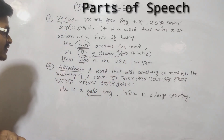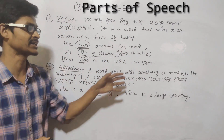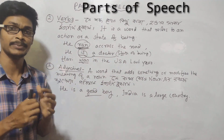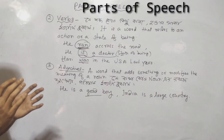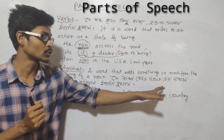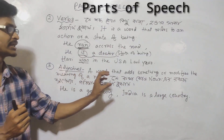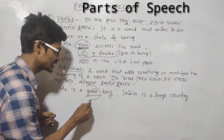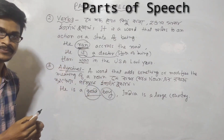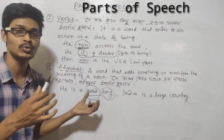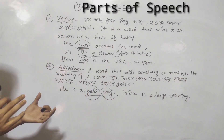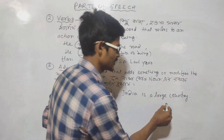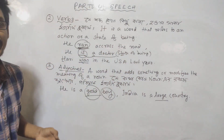What is an adjective? An adjective adds something or modifies the meaning of a noun. For example, 'This is a good boy' — here 'good' is an adjective modifying the noun 'boy'. Another example: 'India is a large country' — 'large' is the adjective. So these are our adjectives.